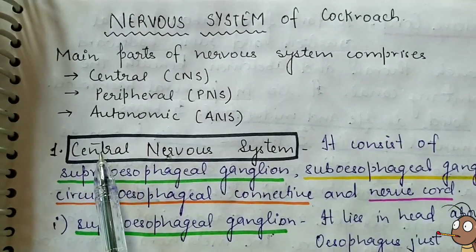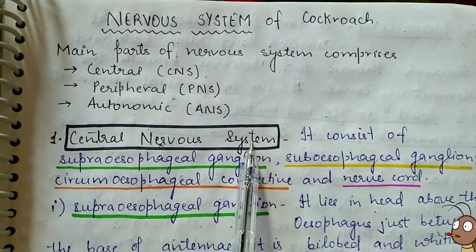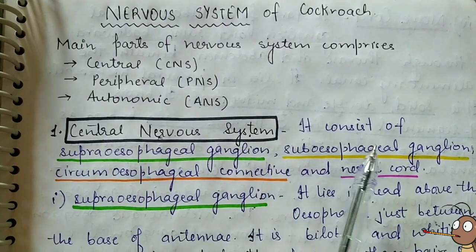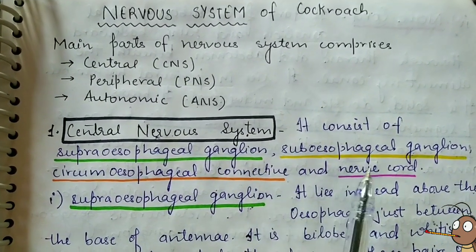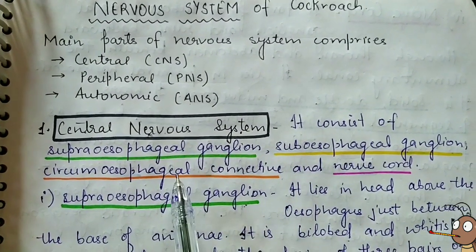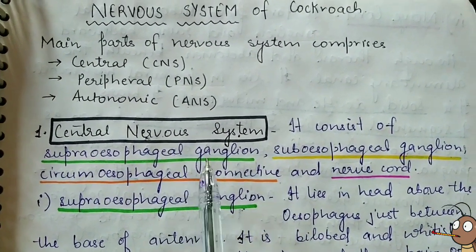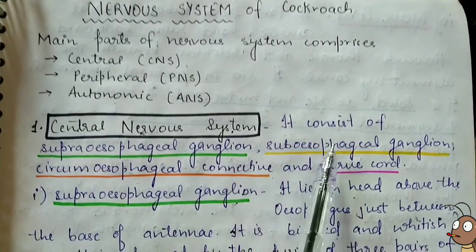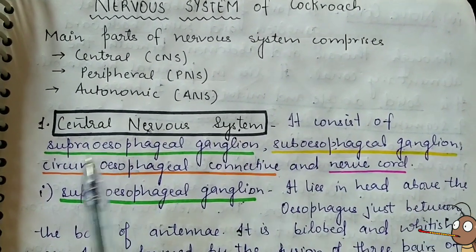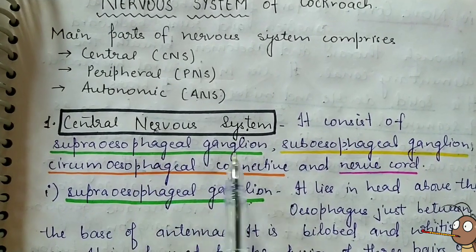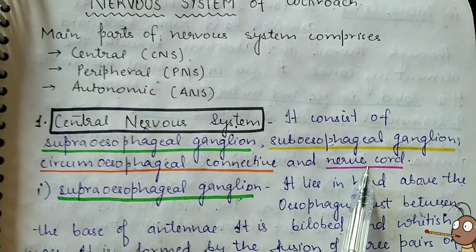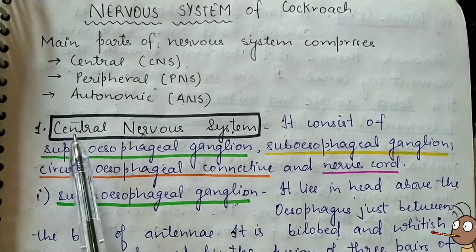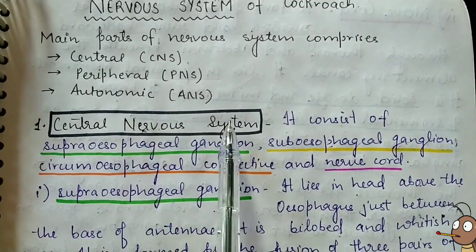Talking about the central nervous system, it comprises the whole ganglion, nerve cord, and connectives. These are the supraesophageal ganglion, subesophageal ganglion, circumesophageal connective, and nerve cord. These 4 components make up the central nervous system.